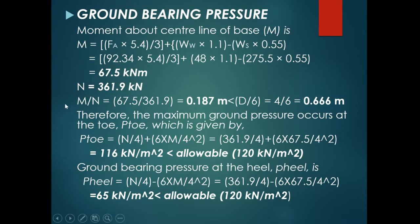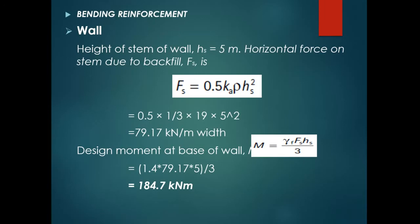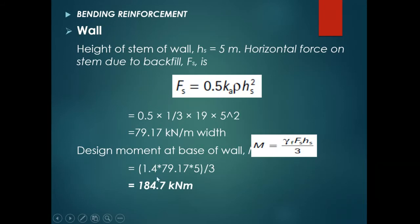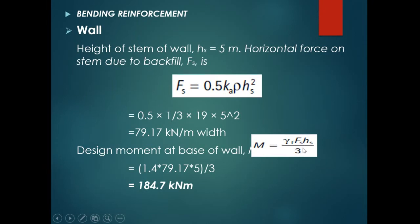Now we'll design the reinforcement. First, the bending reinforcement for the wall. The horizontal force on the stem per meter width is Fs = 0.5 × Ka × ρ × h², where Ka is active earth pressure coefficient, ρ is soil density, and h = 5 m. The design moment at the base of the wall is γf × Fs × h/3, where γf = 1.4 is the factor of safety. The h/3 term arises because the pressure centroid of the triangular distribution acts at one-third of the total height.